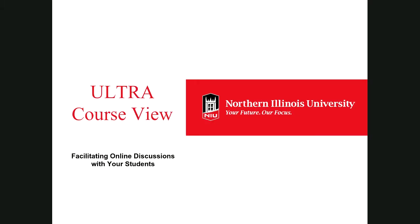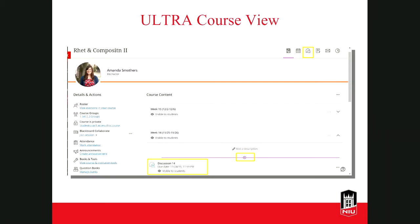That's it for the original course view instructions. Some of you may be using ultra course view. There's a difference between ultra base navigation — which is what we all see when we first log into Blackboard — and ultra course view, which is the design of an individual course, what you see when you click on the course you're teaching. There are two places you can create a discussion in an ultra view course: one is in the course content area, and the other is through the discussion icon in the upper right-hand corner of the course page.